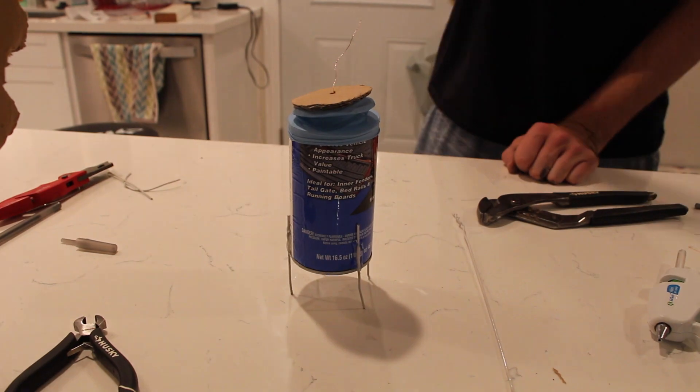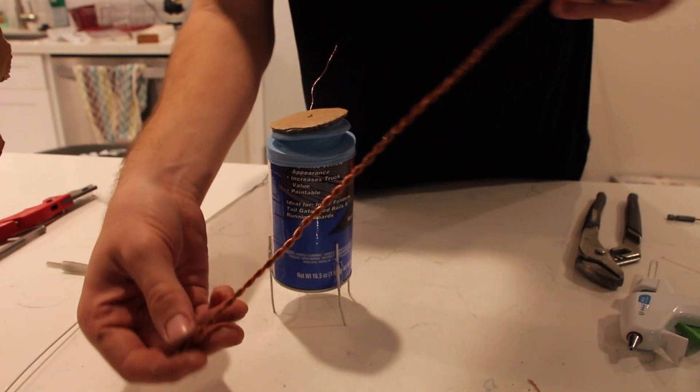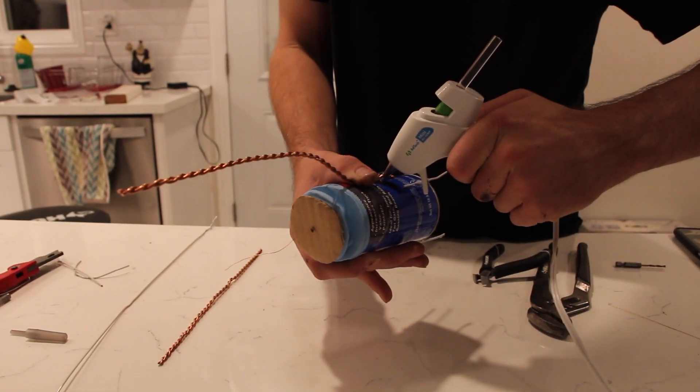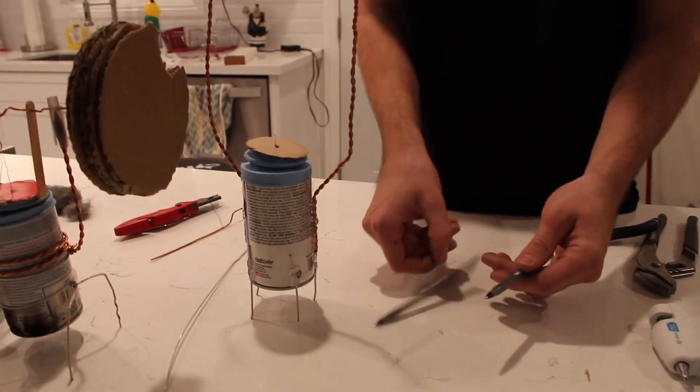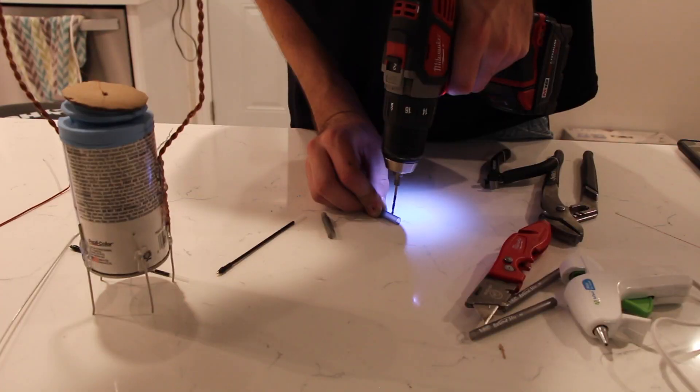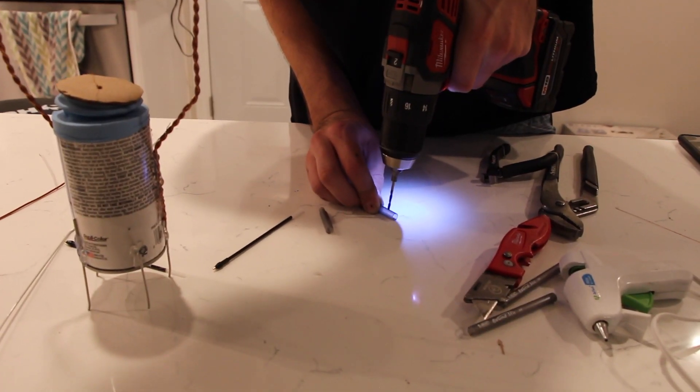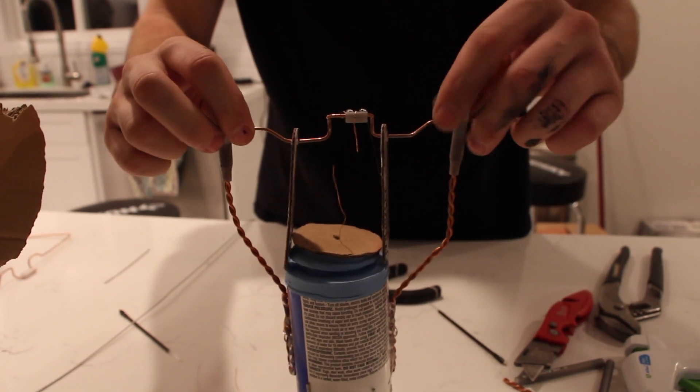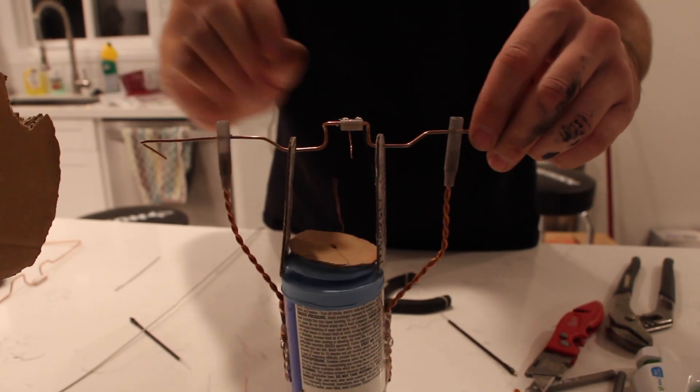Now you got your stand. I just braided two 12 gauge copper wires together, so I'm going to use that. We're going to take two pens, we're going to sacrifice them. Okay, so now we have our crankshaft on here and it's centered.